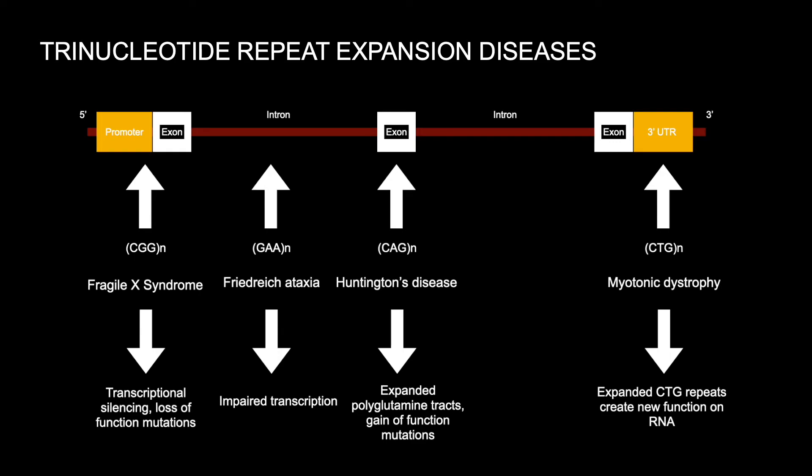The following four trinucleotide repeat expansion diseases are Huntington's disease, myotonic dystrophy, Fragile X syndrome, and Friedrich ataxia. These may show genetic anticipation such that severity increases and age of onset decreases in successive generations. Each of these diseases has a different type of trinucleotide repeat.